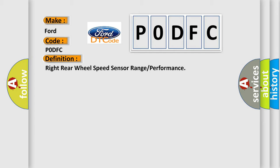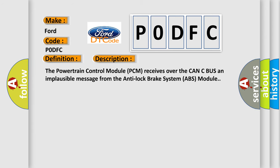The basic definition is Right Rear Wheel Speed Sensor Range or Performance. And now this is a short description of this DTC code. The powertrain control module (PCM) receives over the CAN-C bus an implausible message from the anti-lock brake system (ABS) module.